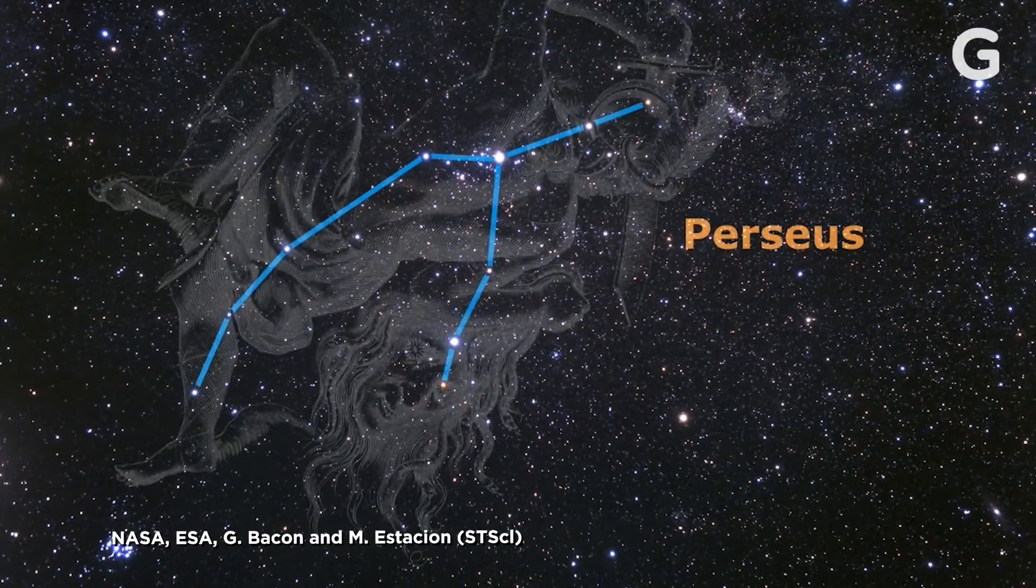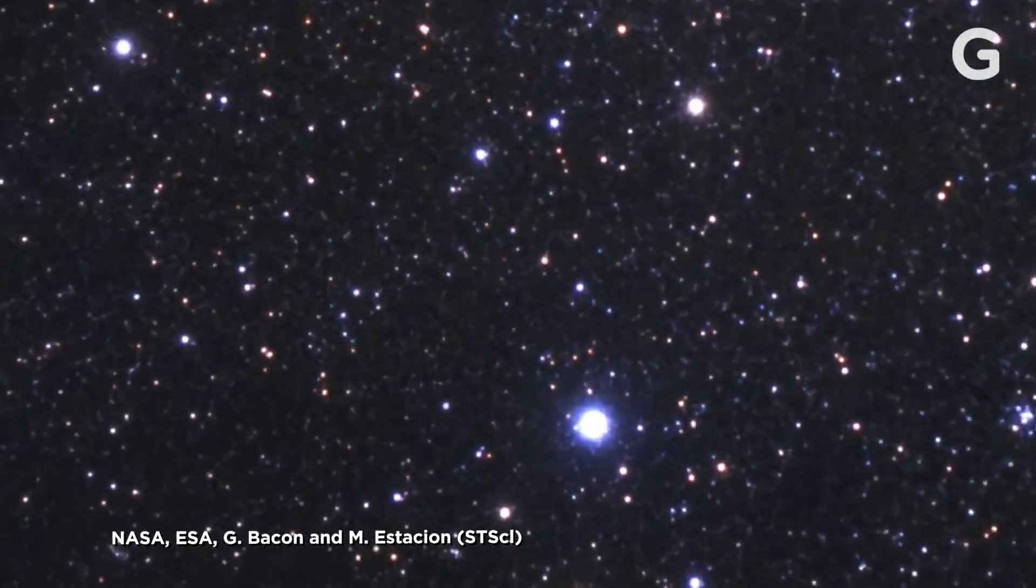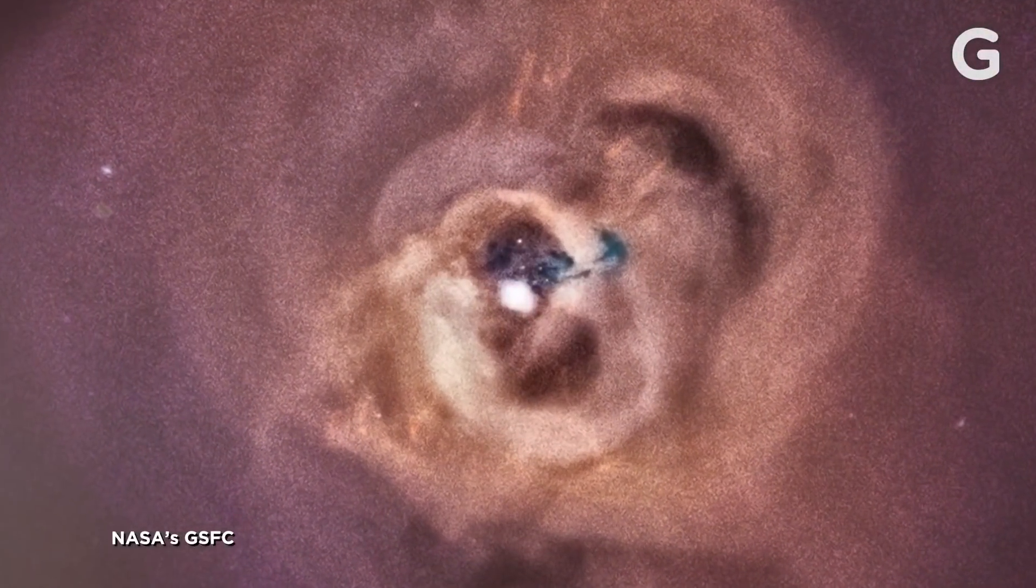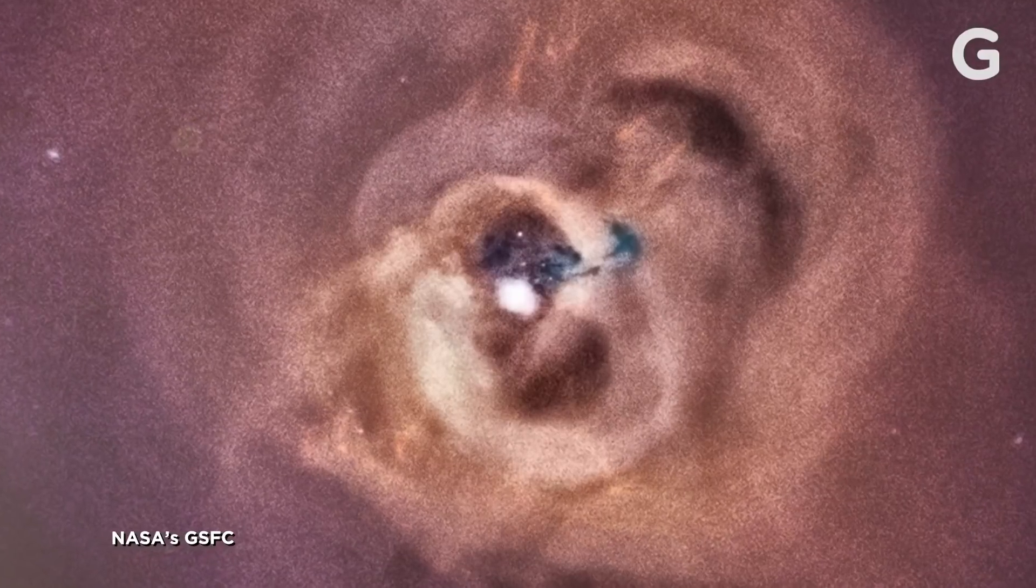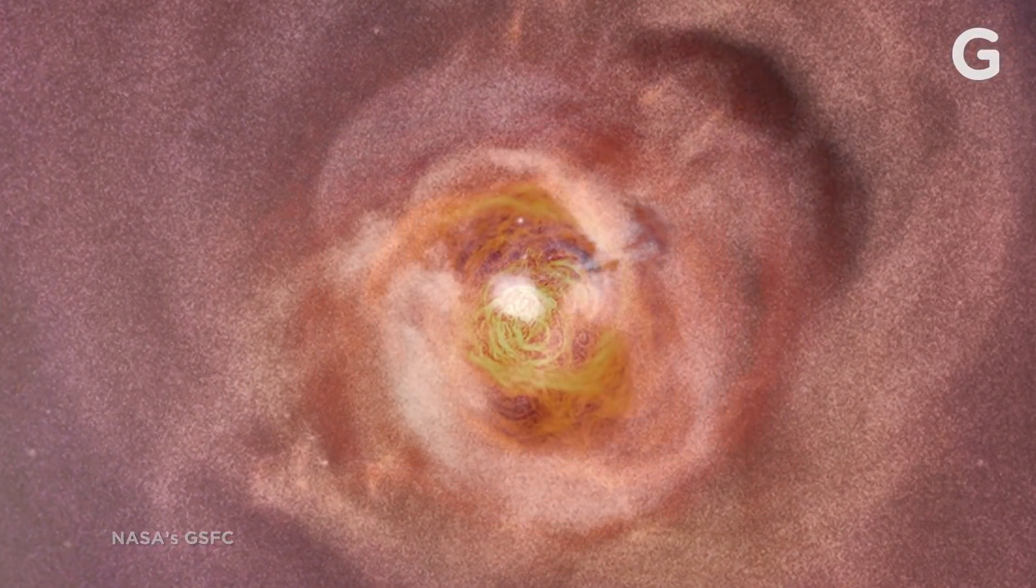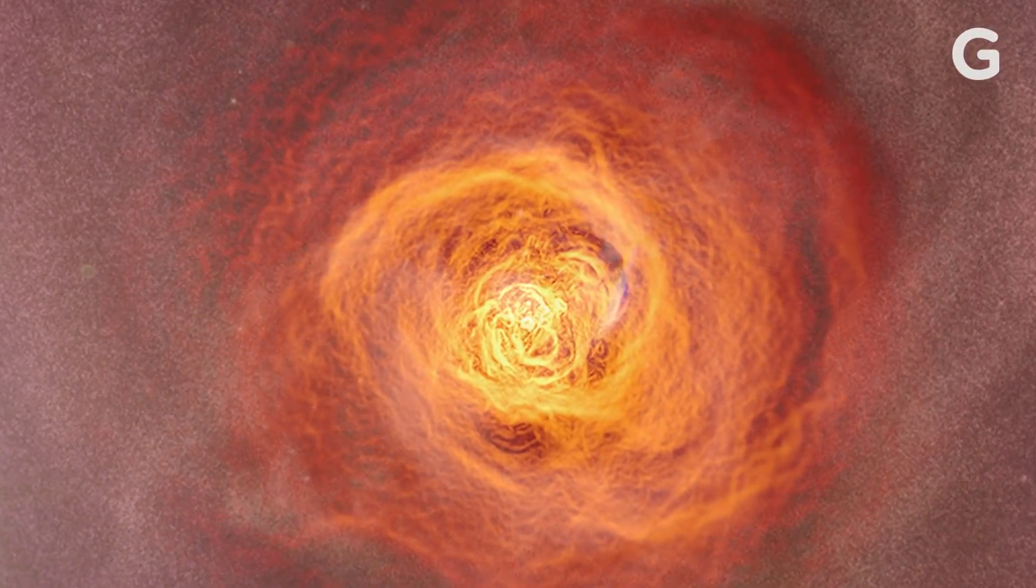The Perseus cluster is one of the biggest galaxy clusters, and it is about 250 million light-years away from us. So people were looking at the Perseus cluster because they wanted to study the gas in more detail, figure out its structure, is it cooling or not, what's going on.